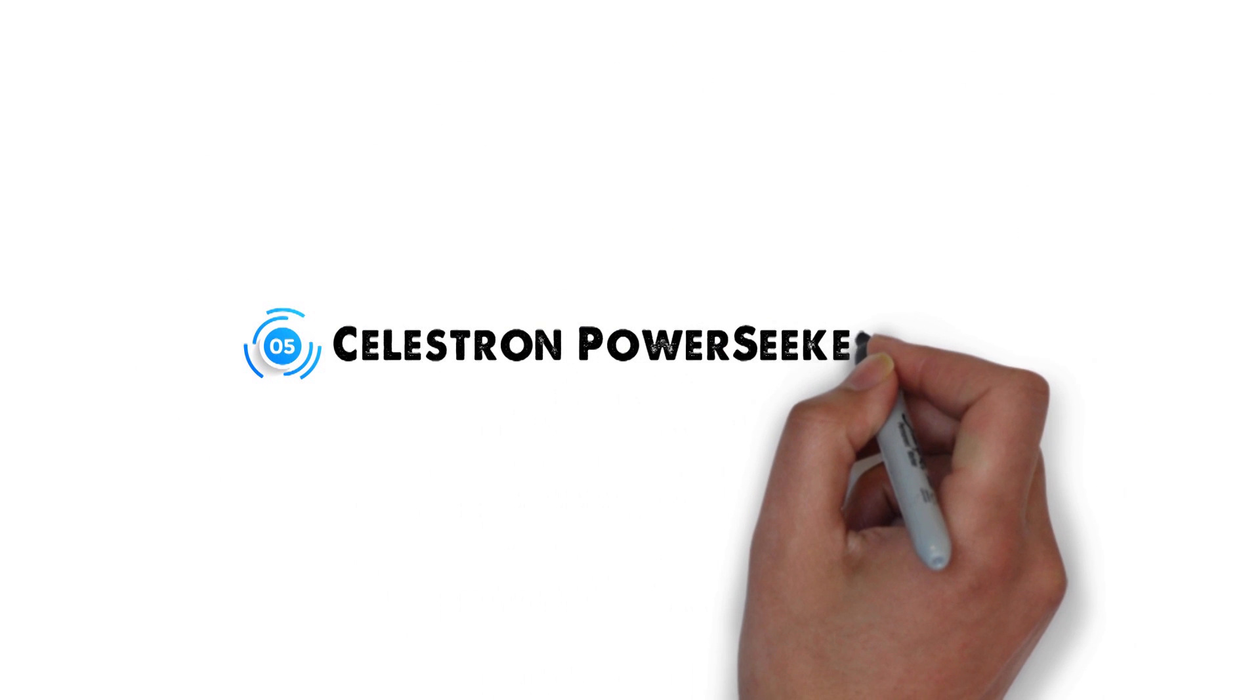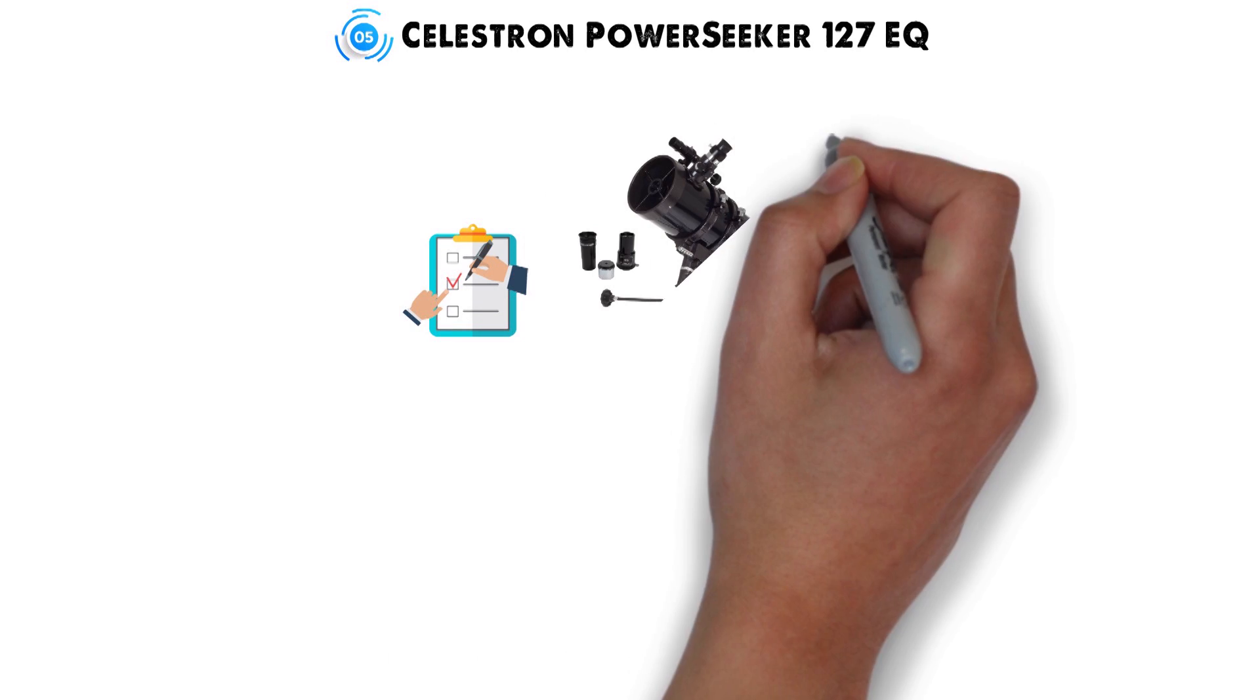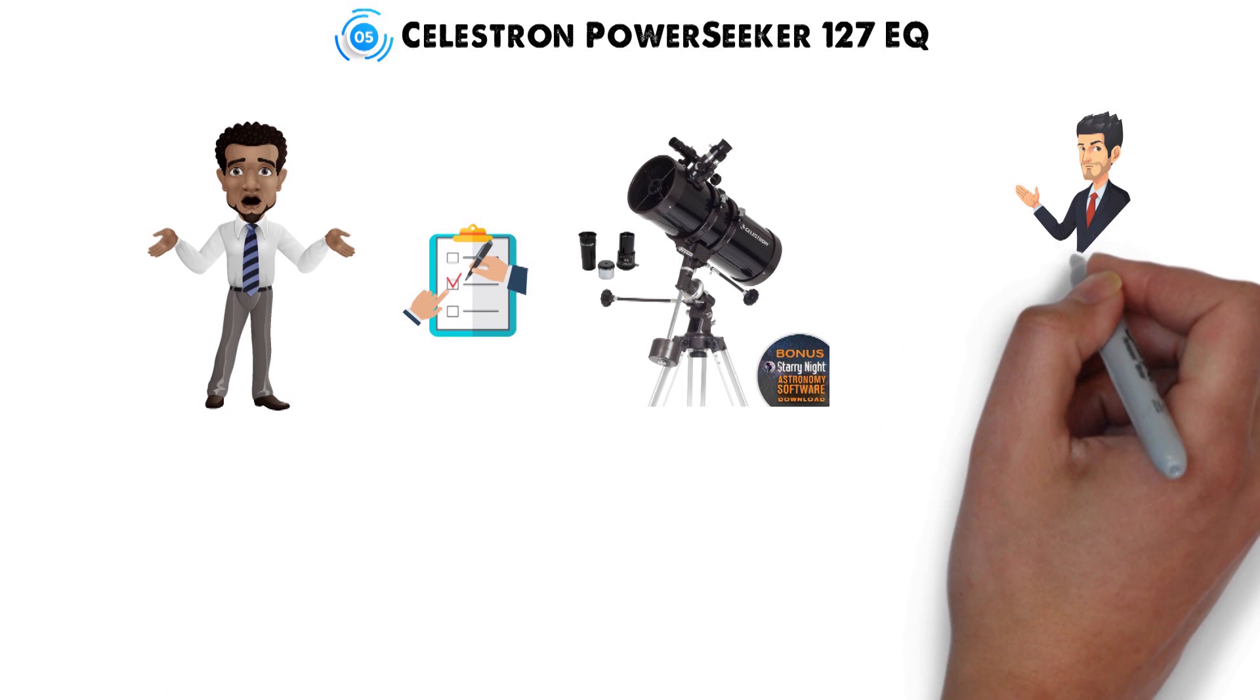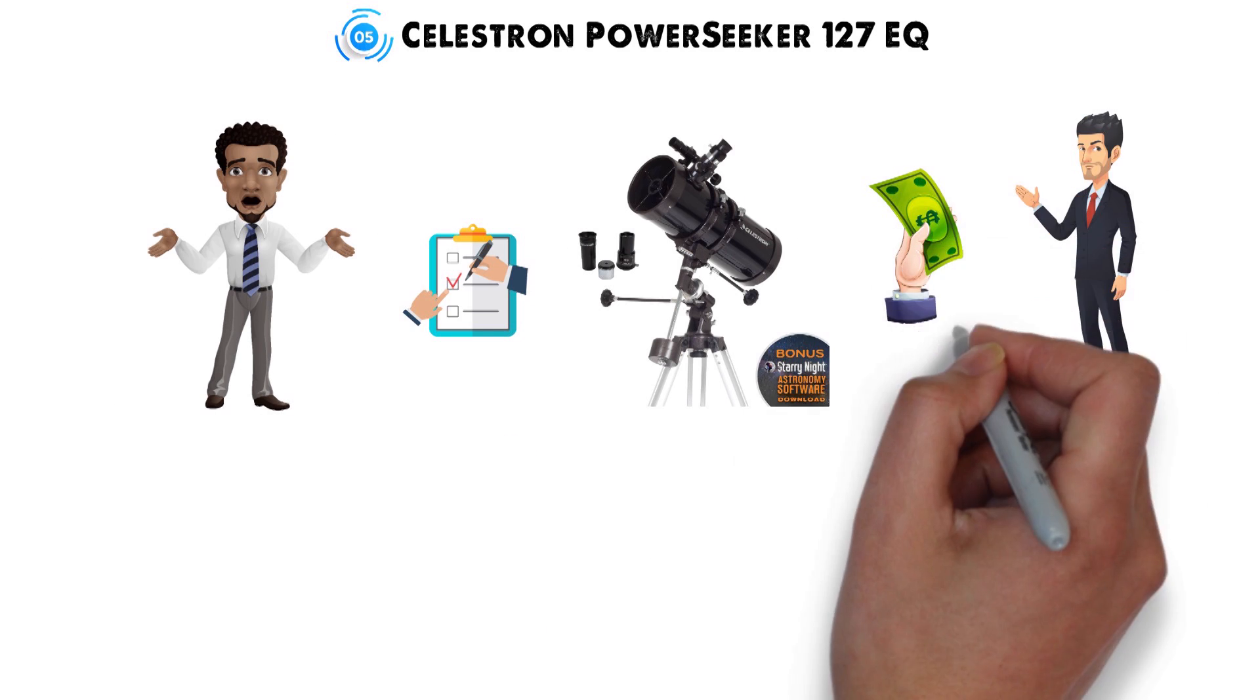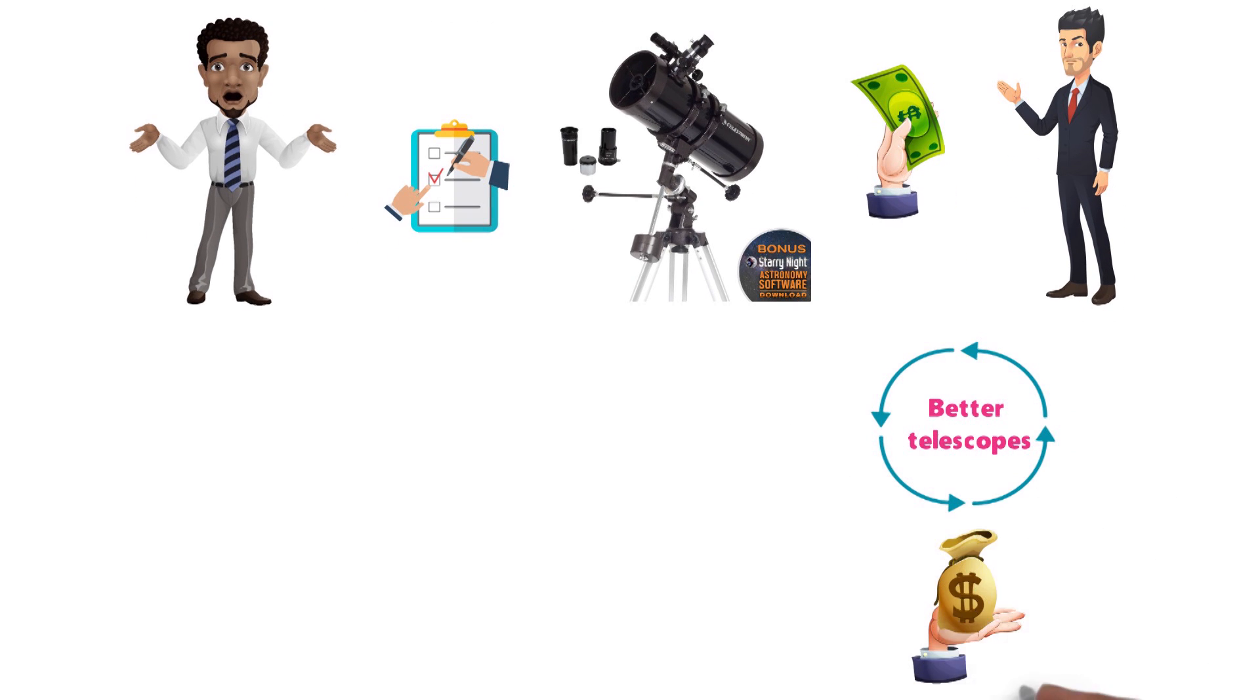And for our final pick at number 5 we have the Celestron PowerSeeker 127EQ. The last telescope on this list is the PowerSeeker 127. This isn't the most powerful telescope that you'll find, but it is a good example of what you're going to get for a cheaper price. There are other better telescopes if you're looking for budget telescopes to use with the kids.